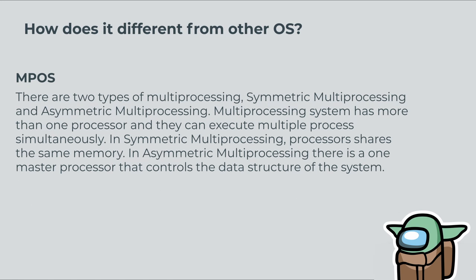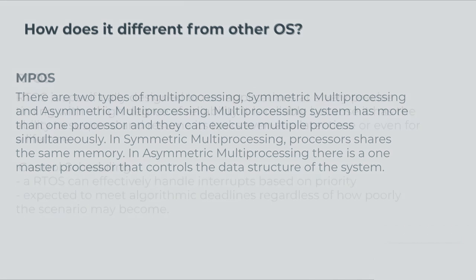There are two types of multiprocessing: symmetric multiprocessing and asymmetric multiprocessing. A multiprocessing system has more than one processor and they can execute multiple processes simultaneously. In symmetric multiprocessing, processors share the same memory. In asymmetric multiprocessing, there is one master processor that controls the data structure of the system.